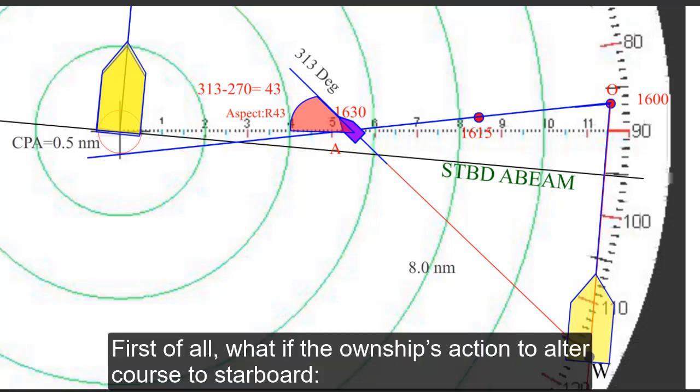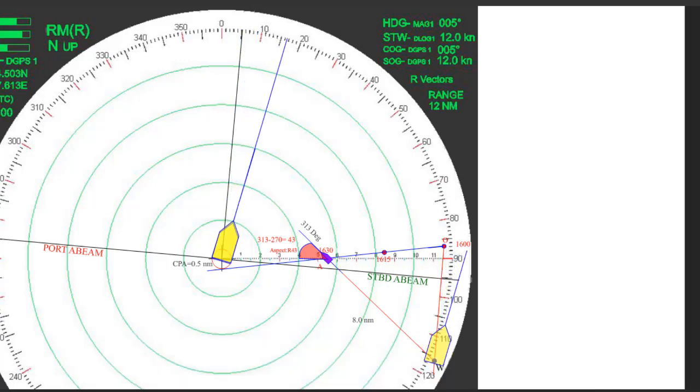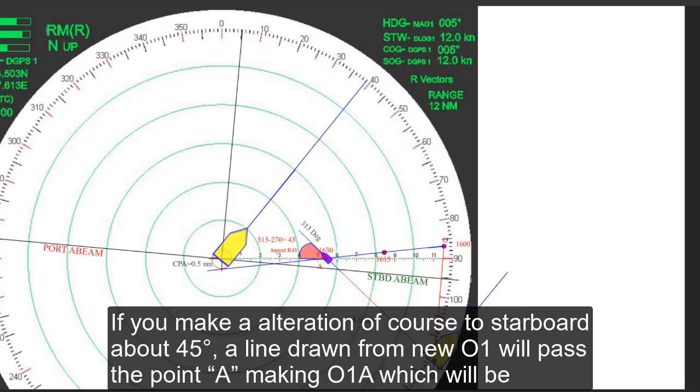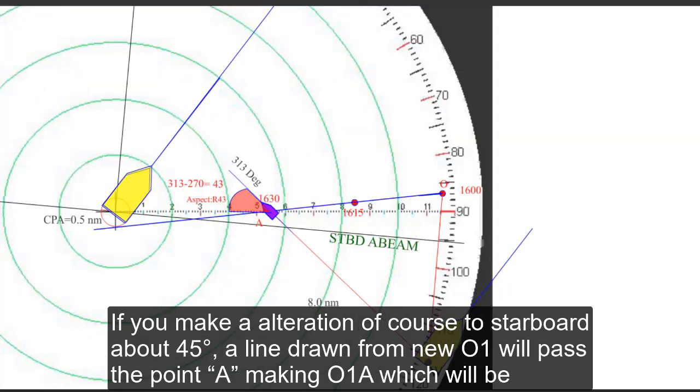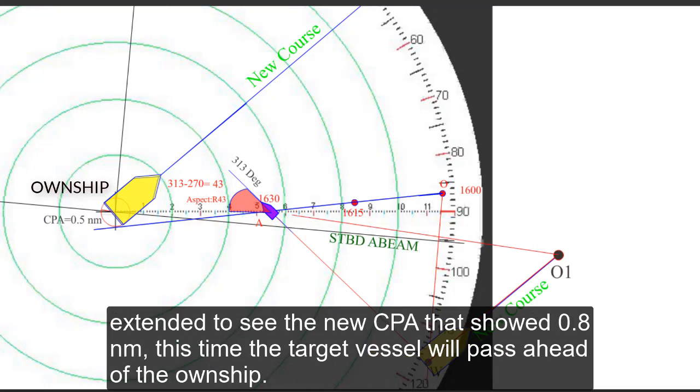First of all, what if the own ship's action to alter course to starboard? If you make an alteration course to starboard about 45 degrees, a line drawn from a new point, a new O1 will pass the point A making O1-A which will be extended to C the new CPA that has shown 0.8 nautical miles.